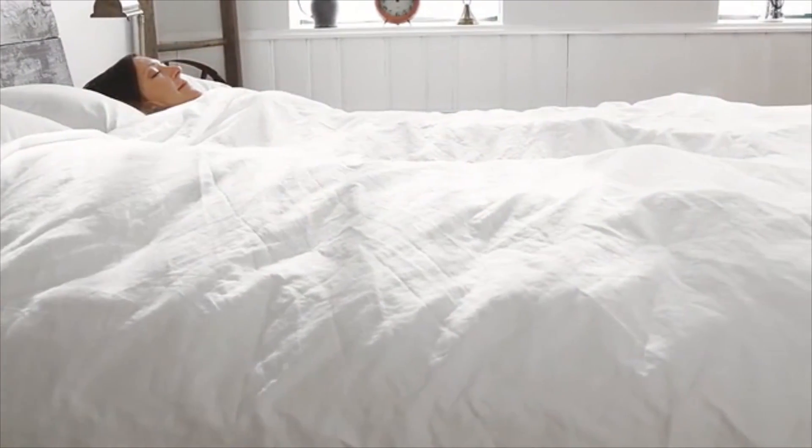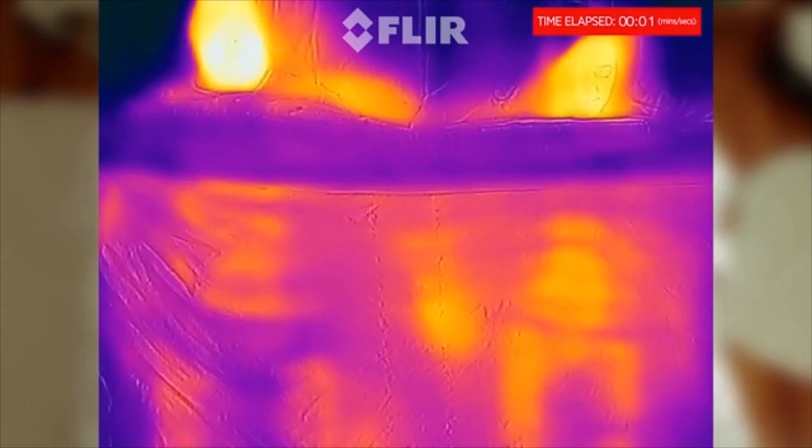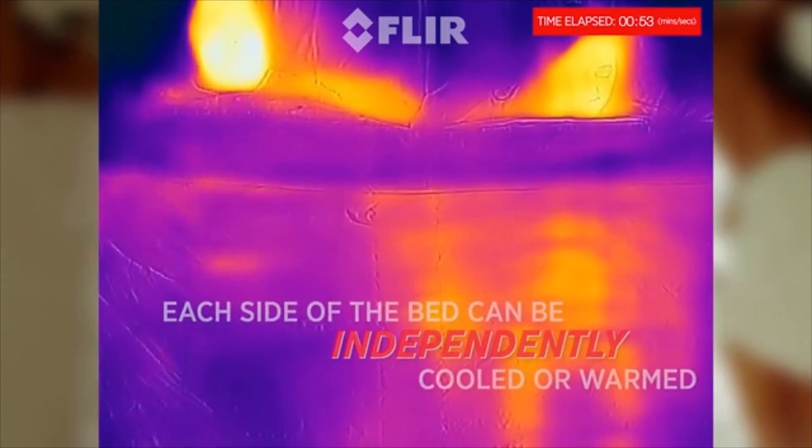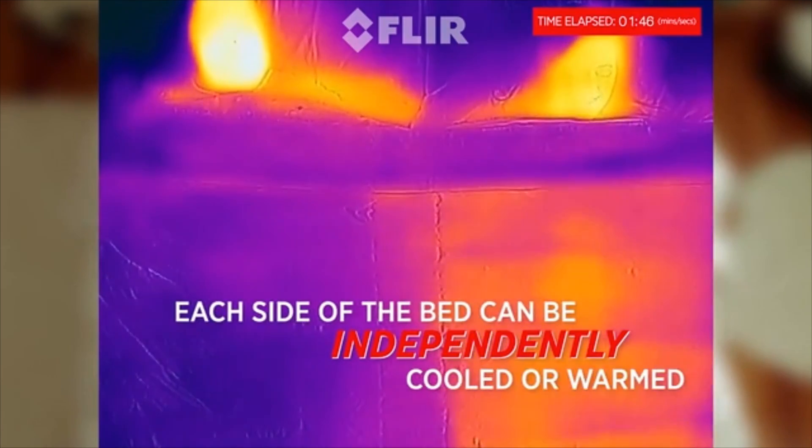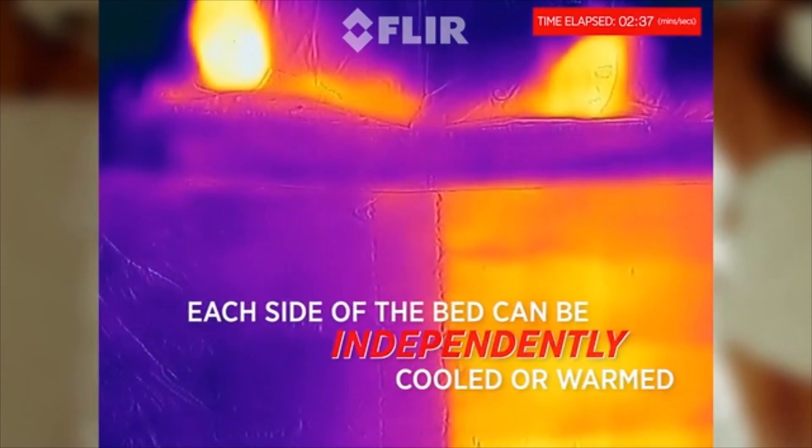Dual zone capability even lets you and your partner find your own perfect sleep temperature for each side of the bed. In the four months we've been shipping, the BedJet has rocketed to become the number one customer-rated bed cooling product on all of Amazon and the number one customer-rated product of any kind in the Amazon mattress topper category.